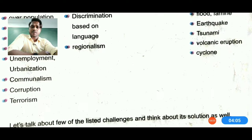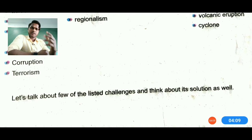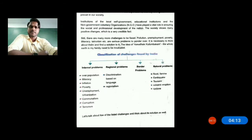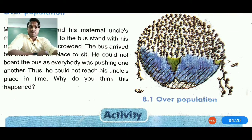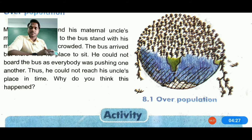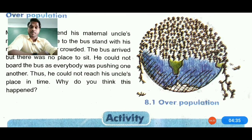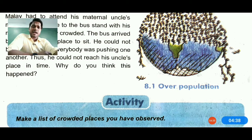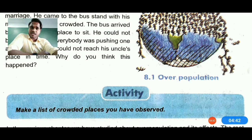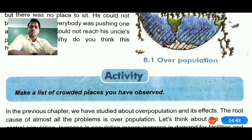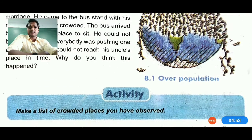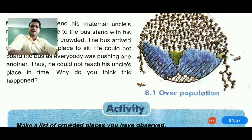Let's talk about a few listed challenges and think about their solutions. An image shown here depicts human beings falling off the earth — a clear sign that we have less land and maximum population. We need to control population and plan family management. Overpopulation is a main reason for India's poverty. For example, Mallard had to attend his maternal uncle's marriage and came to the bus stand with his mother, but it was very crowded and he could not board the bus.